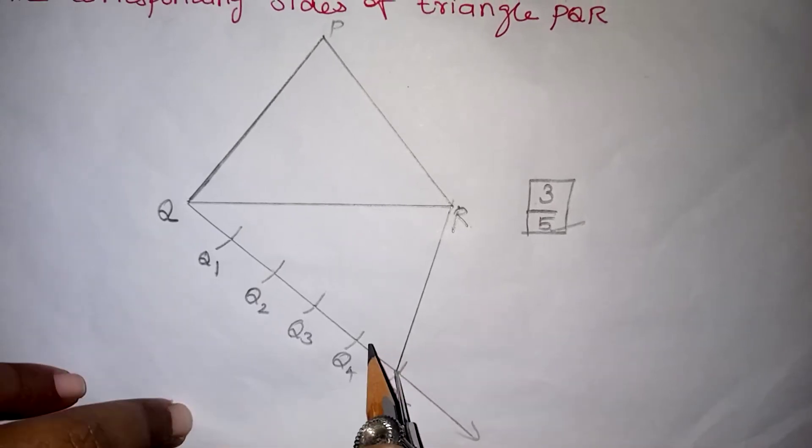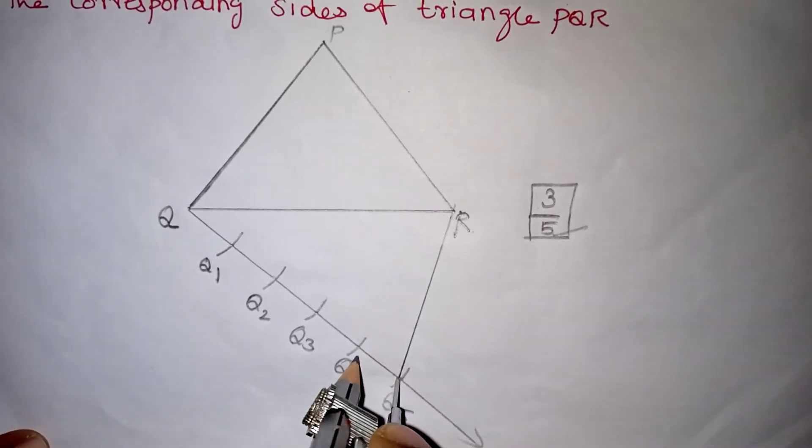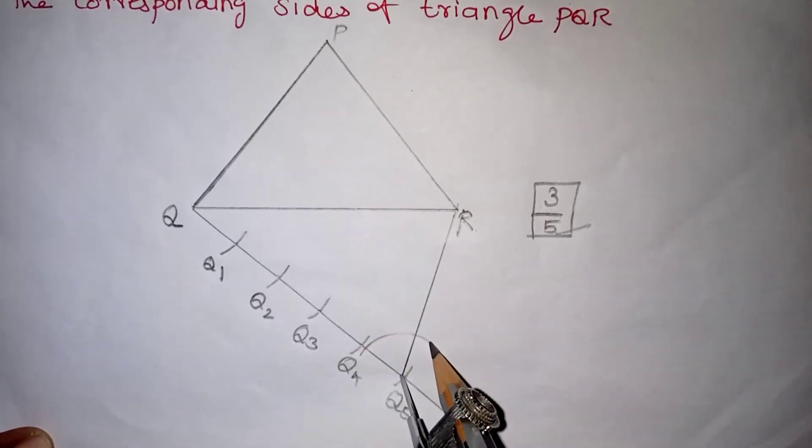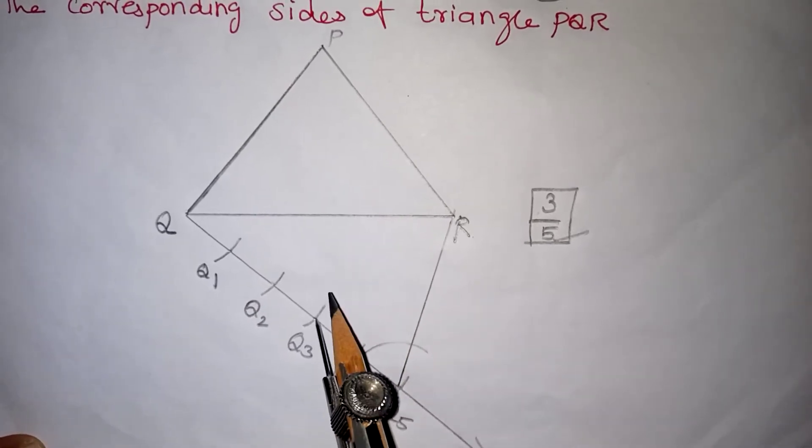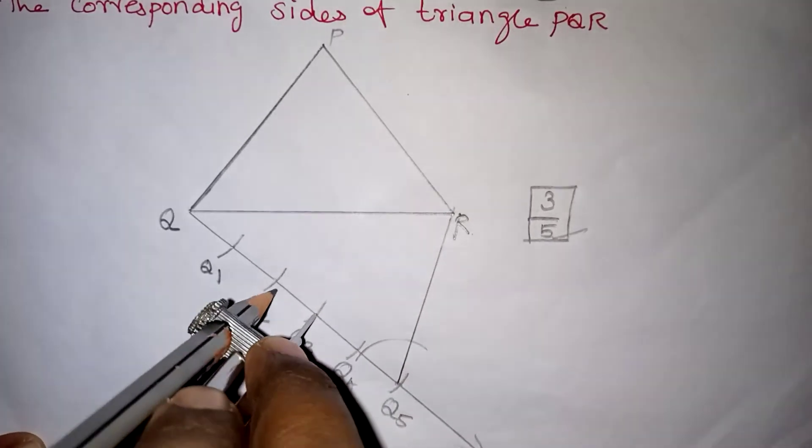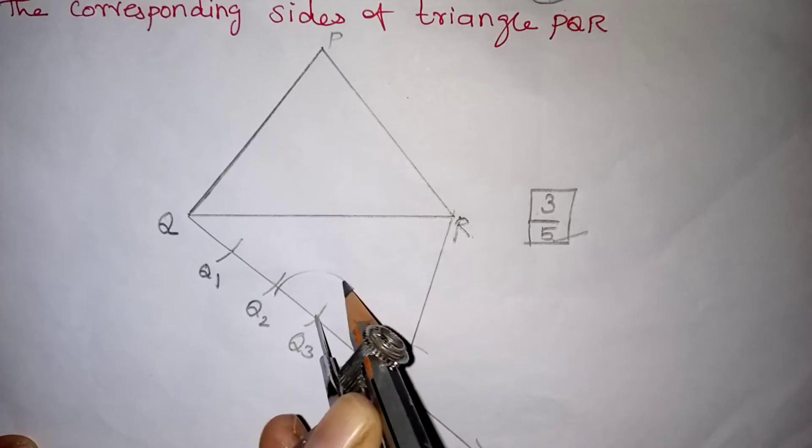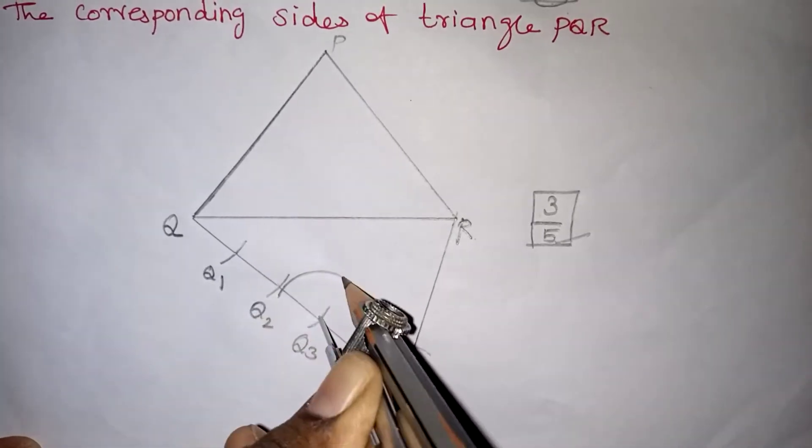Keep it here in Q5. Listen, children. Cut the arc like this. With the same measure, at Q3 also, just cut an arc in this way. Cut like this.